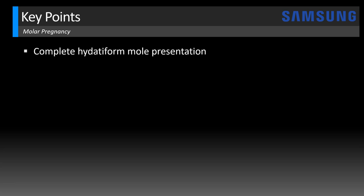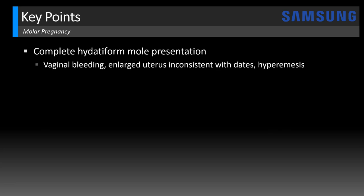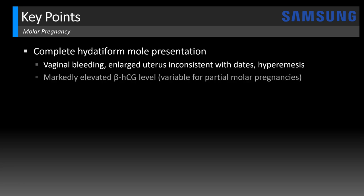How do complete hydatidiform moles present? Typically, there will be vaginal bleeding, an enlarged uterus inconsistent with dates, and even hyperemesis. Classically, you'll have markedly elevated beta-HCG levels — in this case it was around 800,000. With partial molar pregnancies, however, the HCG level is variable; you might have an HCG that's closer to normal, which again makes it more difficult to diagnose those partial molar pregnancies.